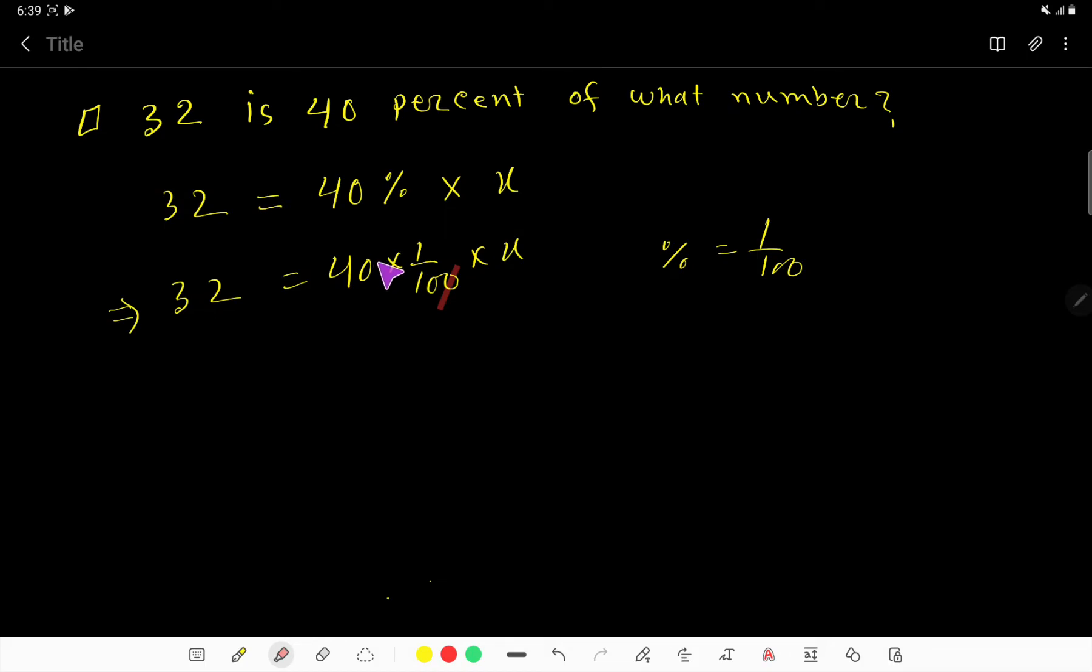The zeros cancel each other. If I divide 10 by 2, I get 5, and if I divide 4 by 2, I get 2. So we are getting 32 equals 2 over 5 times x.